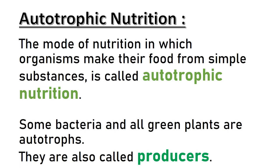Let us first look at what is autotrophic nutrition. The mode of nutrition in which organisms make their food from simple substances is called autotrophic nutrition. Some bacteria and all green plants are autotrophs. They are also called producers.